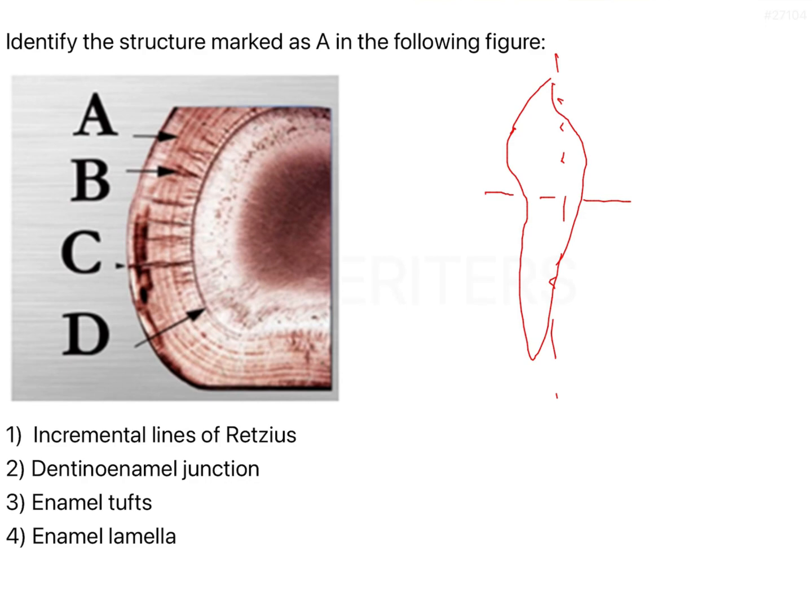If you notice in the image, it is looking brown in color. As we know, brown colored images usually represent enamel because enamel in ground sections—that is, your hard tissue sections—appears brown in color. There are four structures marked A, B, C, and D. All of these structures are hypocalcified, which means